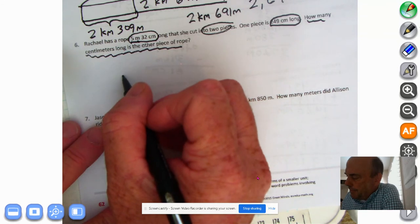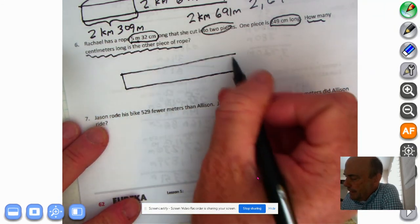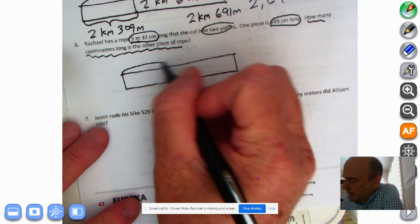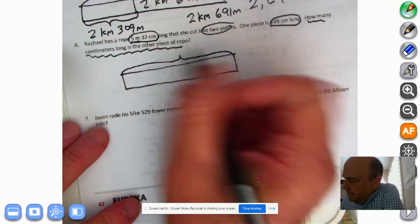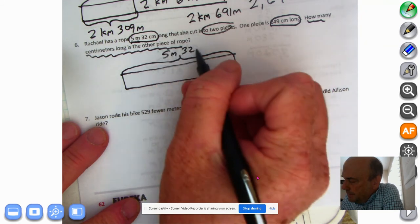So let's start with the first piece of rope. She bought it. Or she had the rope. I don't know if she bought it. But it was 5 meters, 32 centimeters.